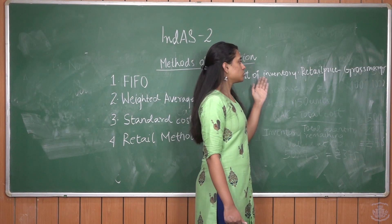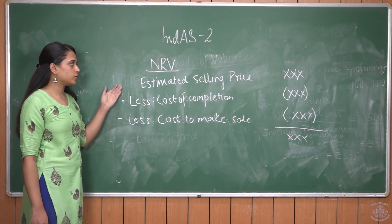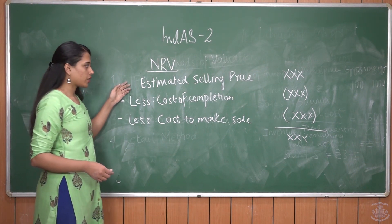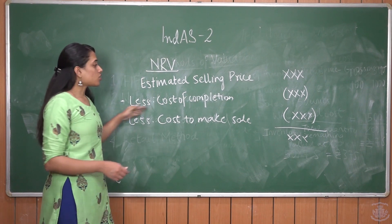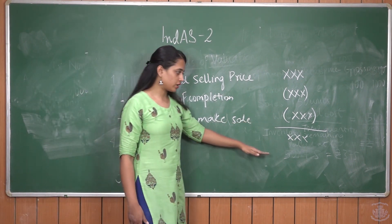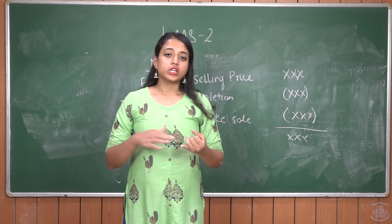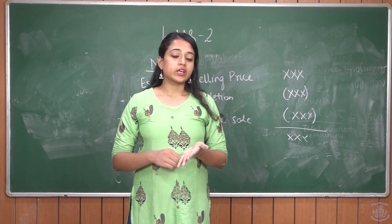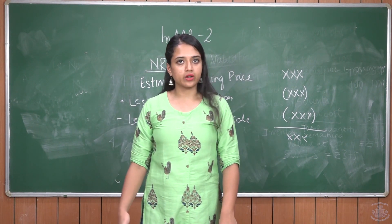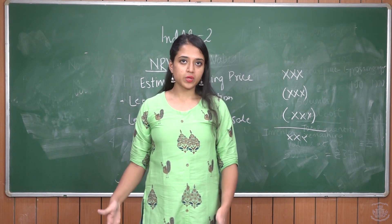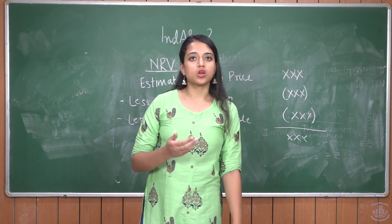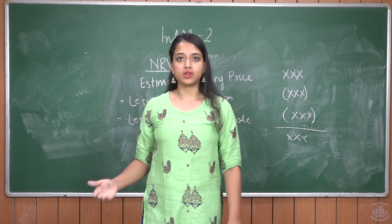As we know, inventory is valued at NRV or cost, whichever is lower. NRV is net realizable value, arrived at as: estimated selling price of inventory, less cost of completion, less cost to make sales. In cases where NRV is lower than cost, it can be due to an increase in cost, a decrease in selling value, obsolescence of inventory, or errors in production. For example, if cost is Rs. 100 and NRV is Rs. 90, inventory is valued at Rs. 90. When the goods are sold, the difference between cost and NRV must be recognized in the P&L as an expense in the same year.